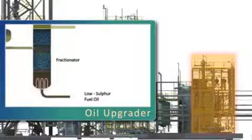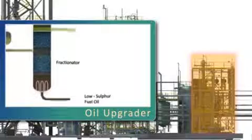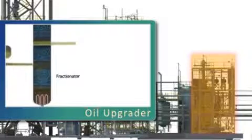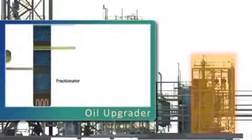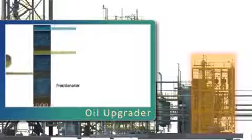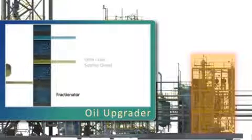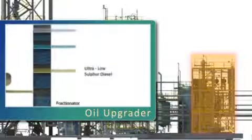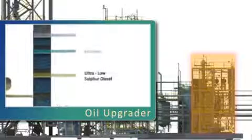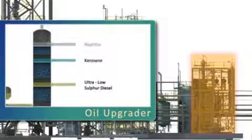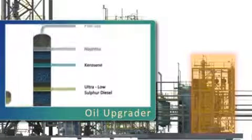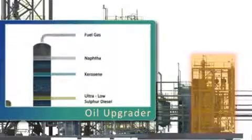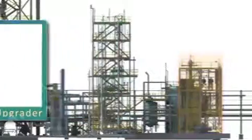The low-sulfur fuel oil fraction is heavier and exits at the bottom of the fractionator, while other fuels are drawn off progressively up the height of the structure. These are ultra-low-sulfur diesel, kerosene or jet fuel, naphtha or petrol, and finally uncondensed vapour.